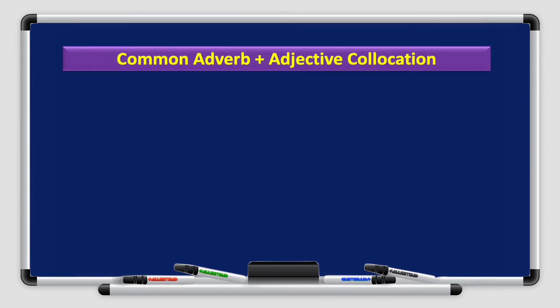With collocations, they're not only used with only one part of speech, so you don't only have a verb and a verb or a noun and a noun collocation. You can have different combinations. And in today's episode, we're going to focus on the adverb and adjective collocation form.